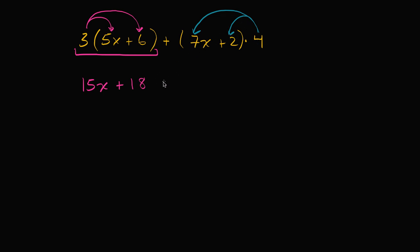Four times seven x, well that's going to be 28 x. 28 x and then four times two is going to be eight. So we're almost there. This part of our expression has simplified to 28 x plus eight.